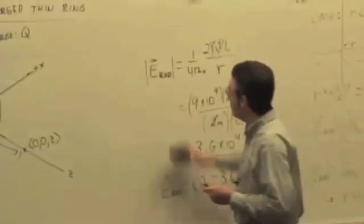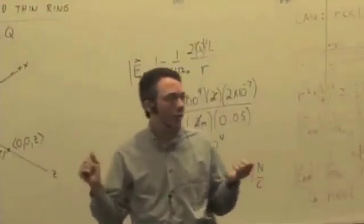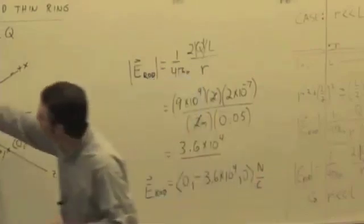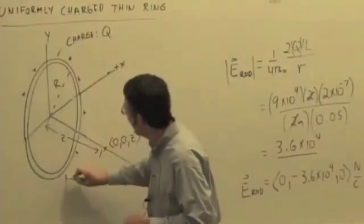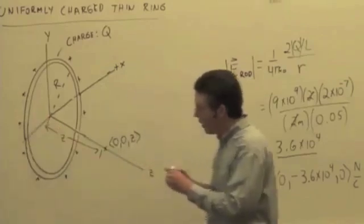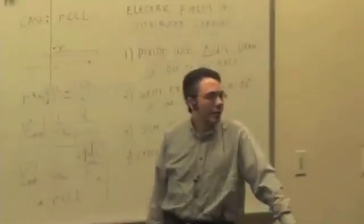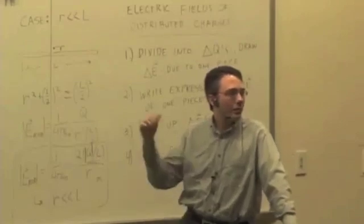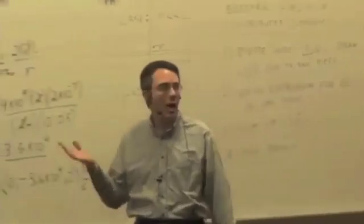Before we even do the calculation, what would you expect? This is a positively charged ring, for example. When we get a result, what would you expect for the direction of the net electric field? Down the Z axis, right? Down the Z axis. Why? What's happening?